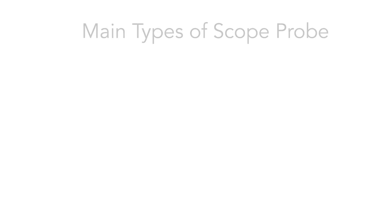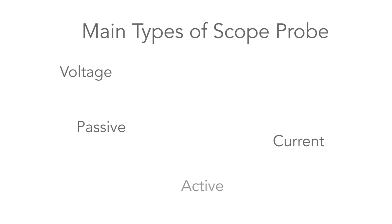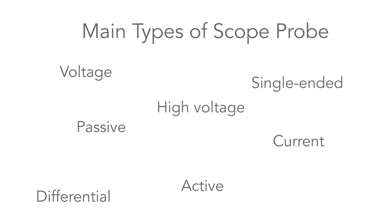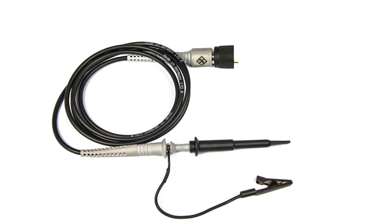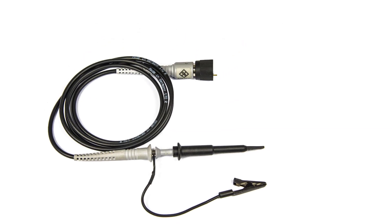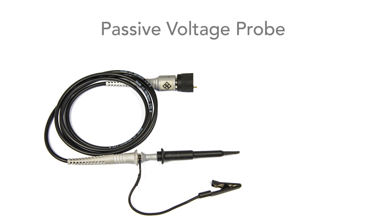Let's summarize some of the main types of probe: voltage or current, passive or active, single ended or differential, and high voltage probes. Within each category there are many to choose from. Let's start by looking at the most widely used probe, the passive voltage probe.